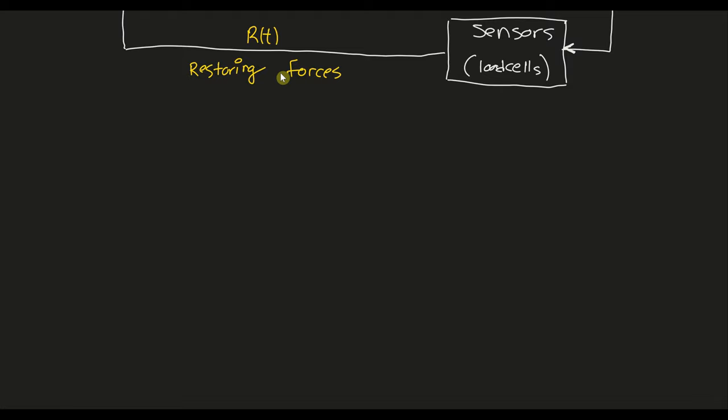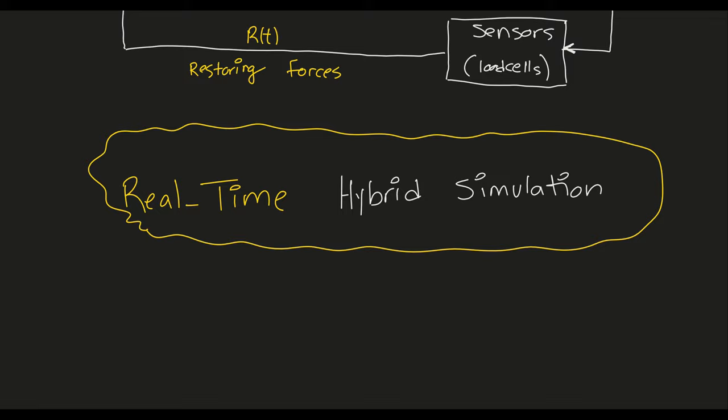Historically speaking, this method has been executed at slow speeds. But we can also execute hybrid simulation at real speeds of the natural hazards. So it will be called real-time hybrid simulation. And so this method is useful for capturing dynamic and rate-dependent behaviors of materials.